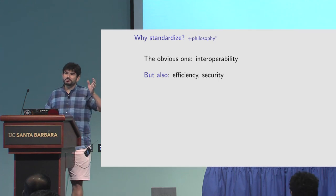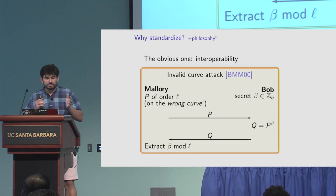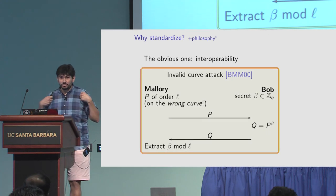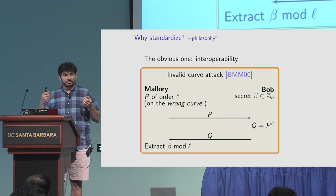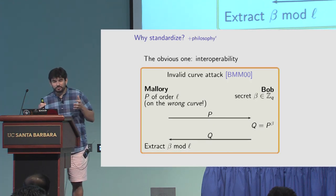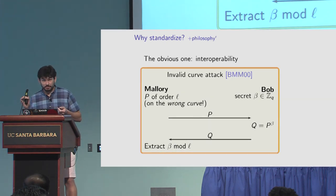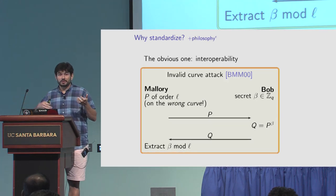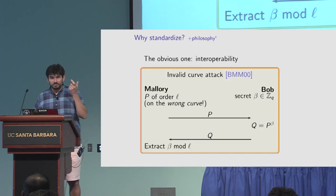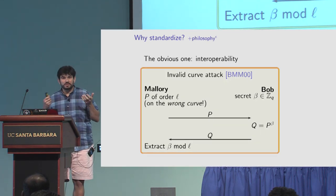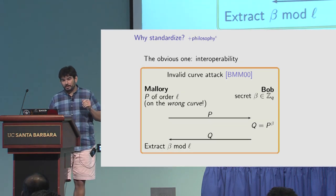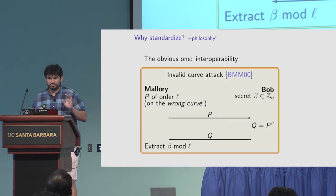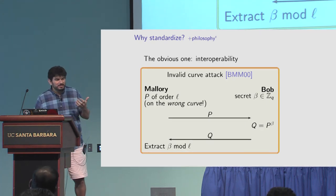Let's think about a specific example - the invalid curve attack, described at Crypto 2000 by Biehlmeyer and Müller. Here's a cartoon protocol: I send you an elliptic curve point, you take your secret scalar, multiply it by the curve point, and send me back the result. But if your software doesn't check that the point is on the curve, I can sneak a lower-order point to you. You'll send back your scalar mod some small value, and since discrete log is easy on small values, I can figure out your secret in about a dozen interactions. This actually happens in blind signatures, OPRFs, and even key exchanges.